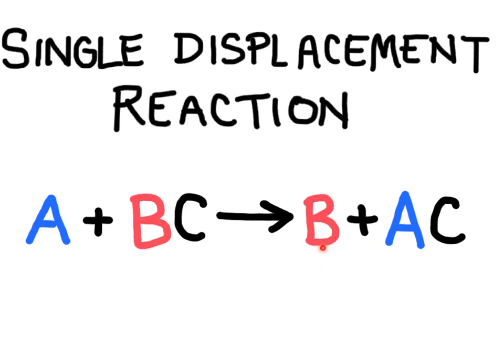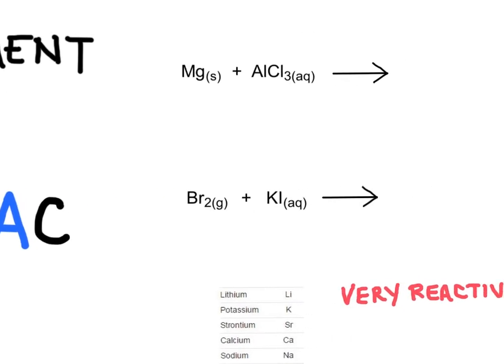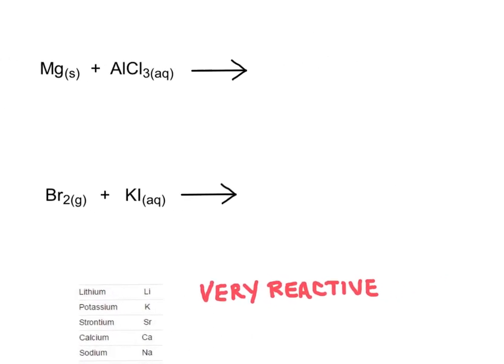The result is that B is now all by itself and A has joined the compound. Usually what happens is we have a metal, represented by A, that swaps places with another metal already in a compound. Let's look at a couple of examples and see how we can predict what the products are going to look like.